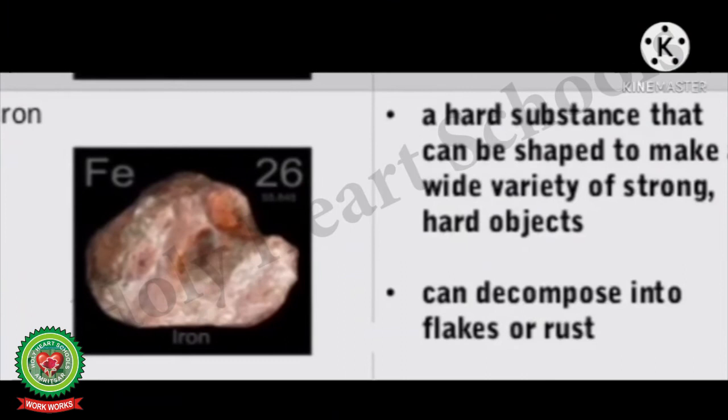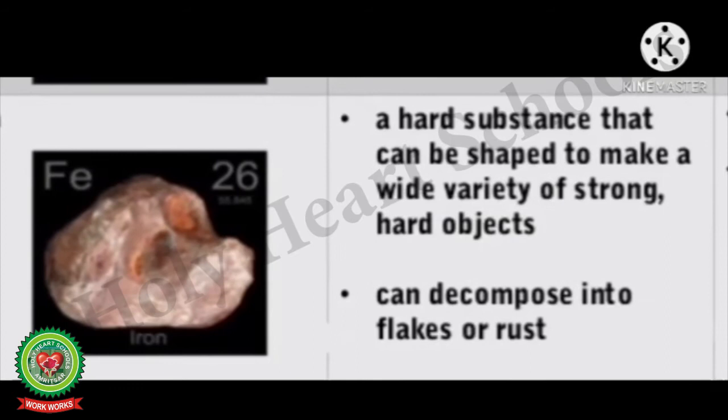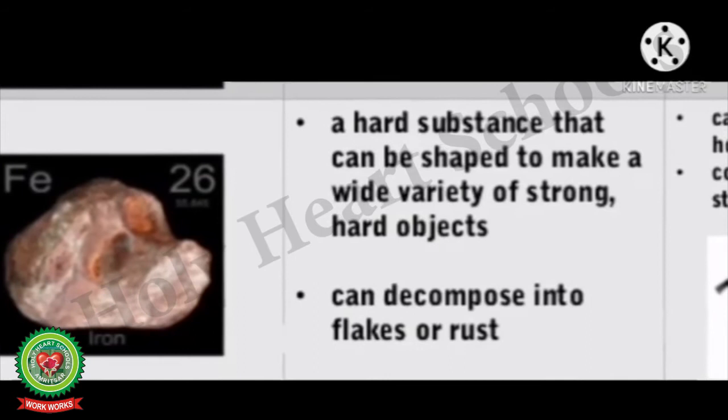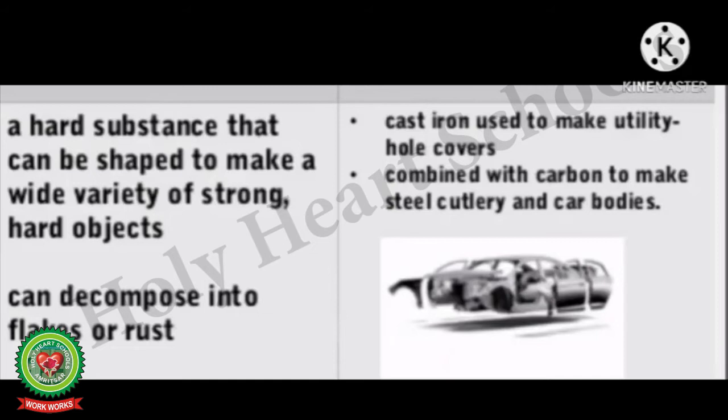Iron: Iron is a hard substance that can be shaped to make a wide variety of strong, hard objects. It can decompose into flakes or rust. Cast iron is used to make utility hole covers. Iron combined with carbon makes steel, which is used for cutlery and car bodies.